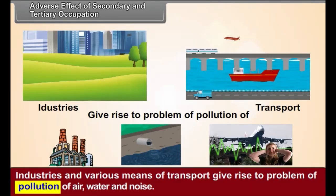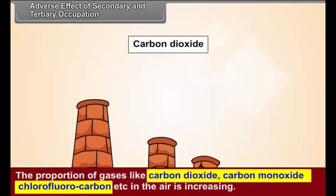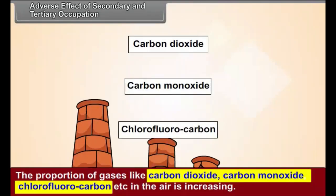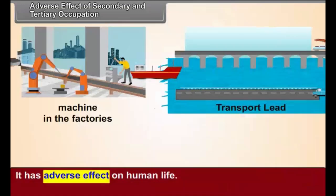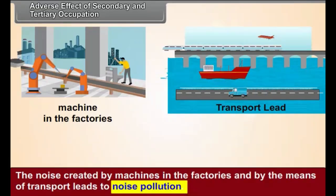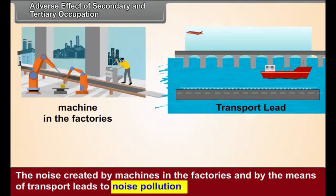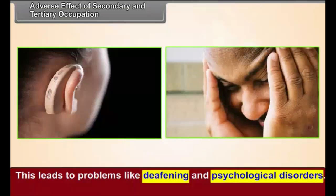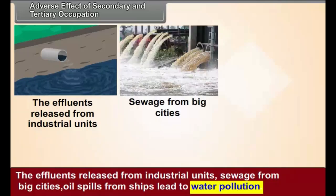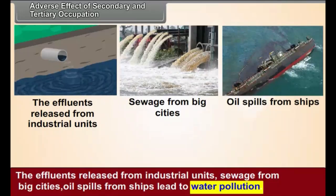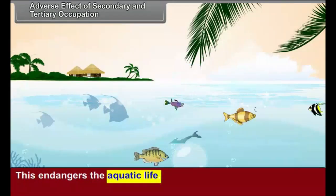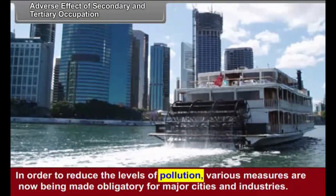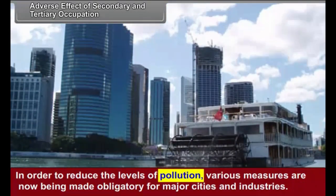Adverse Effects of Secondary and Tertiary Occupations. Industries and various means of transport give rise to problems of pollution of air, water, and noise. The proportion of gases like carbon dioxide, carbon monoxide, and chlorofluorocarbon in the air is increasing. It has adverse effects on human life. The noise created by machines in factories and by means of transport leads to noise pollution. This leads to problems like deafening and psychological disorders. The effluents released from industrial units, sewage from big cities, and oil spills from ships lead to water pollution. This endangers aquatic life. In order to reduce the levels of pollution, various measures are now being made obligatory for major cities and industries.